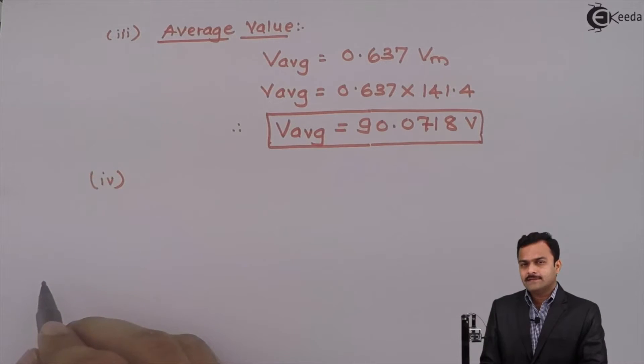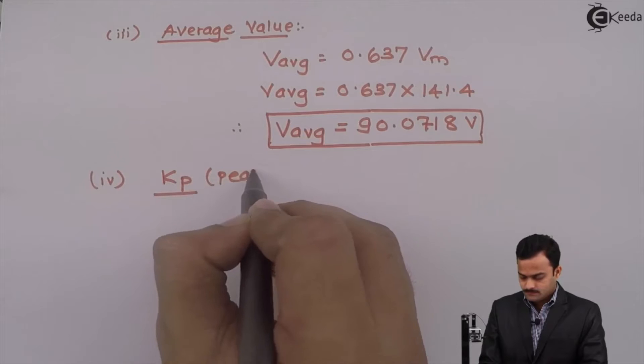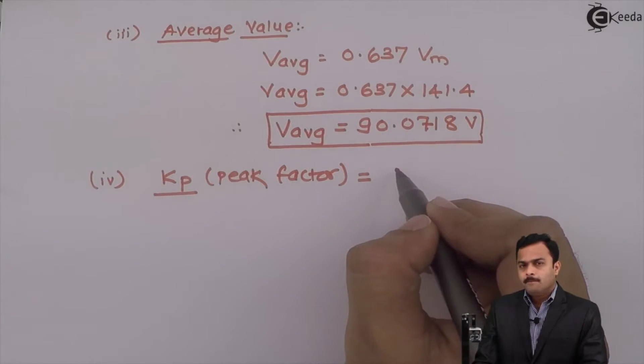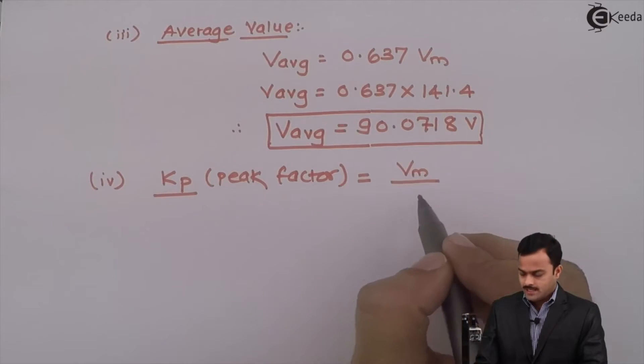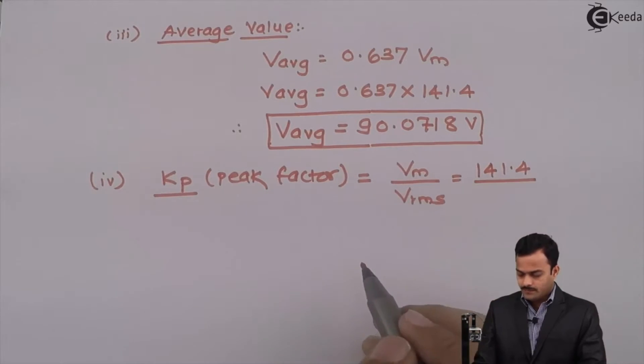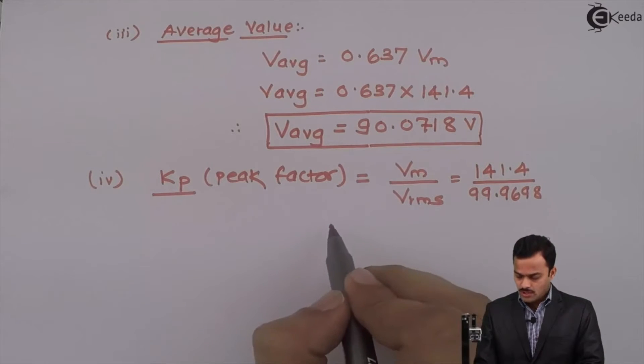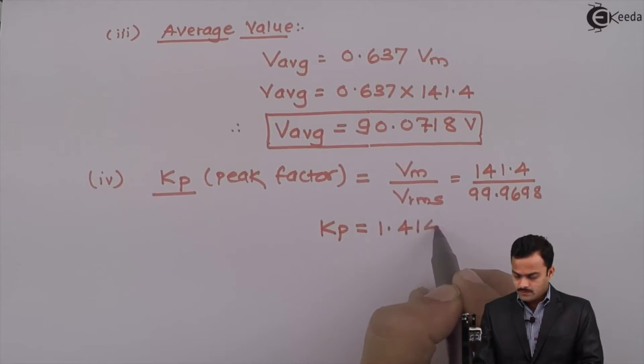Next, peak factor and form factor. Kp is peak factor, which is given as maximum value to RMS value. It is a ratio of maximum value to RMS value: 141.4 divided by RMS value we calculated as 99.9698. If we solve, we will get peak factor as 1.414.